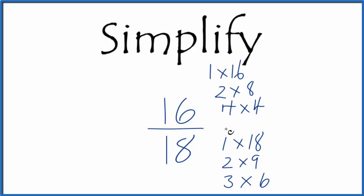When I look for the greatest factor that's common between 16 and 18, it looks like it's just 2. So what we'll do is divide the numerator by 2 and the denominator by 2 to simplify this fraction 16 over 18.